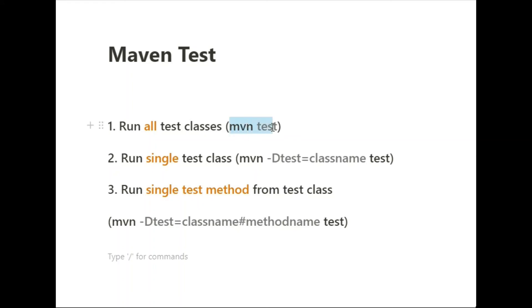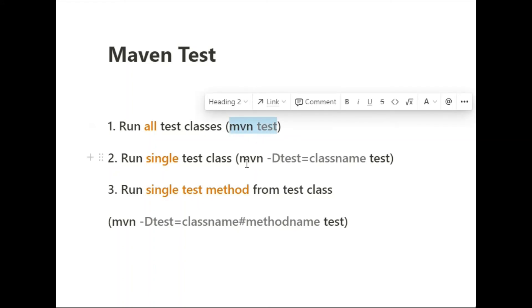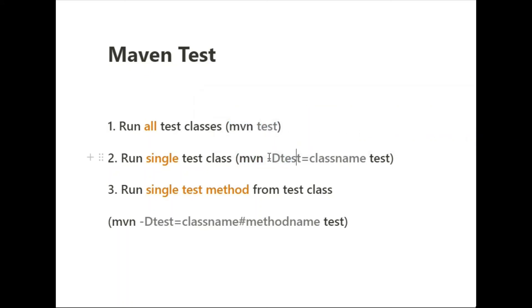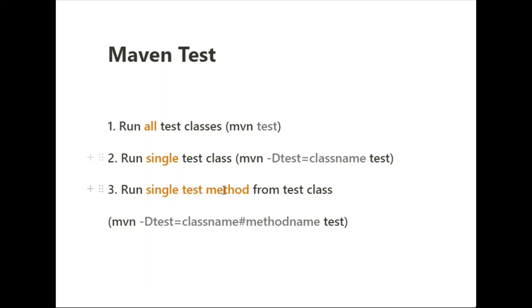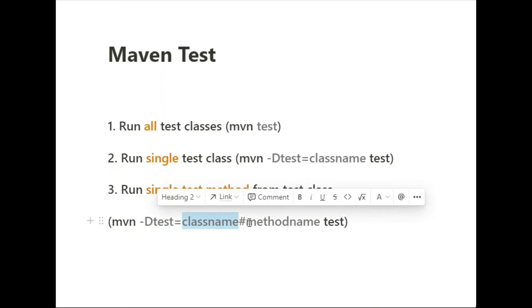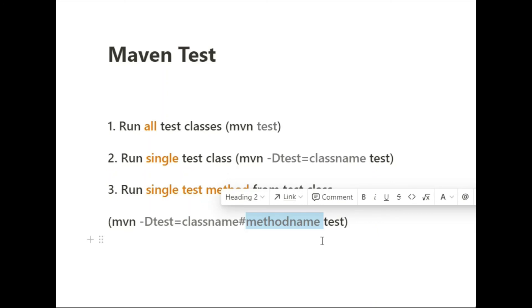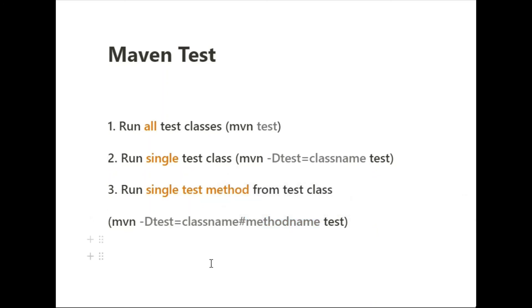To summarize all the combinations: 'mvn test' runs all test classes. 'mvn -Dtest=ClassName test' runs a single specific test class. 'mvn -Dtest=ClassName#methodName test' runs a specific test method from a specific class. All of this is possible thanks to the Maven Surefire Plugin in pom.xml. I hope you liked this video — please share and subscribe to the channel.